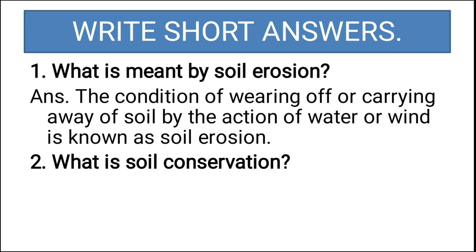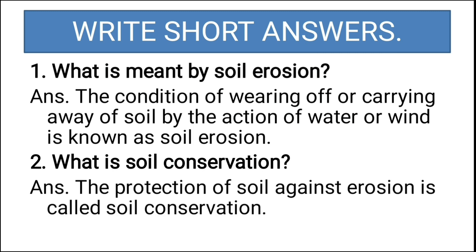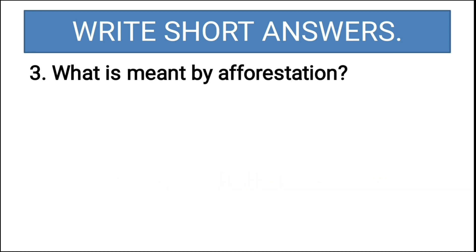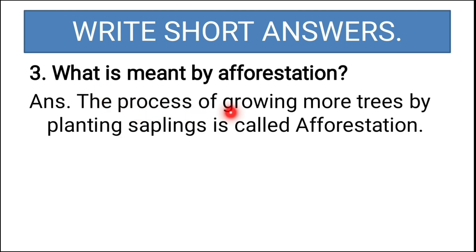Second question: what is soil conservation? The protection of soil against erosion is called soil conservation — this is exactly opposite to soil erosion. Third question: what is meant by afforestation? The process of growing more trees by planting saplings is called afforestation.